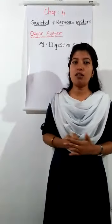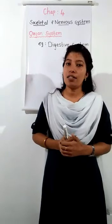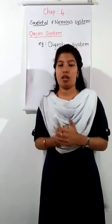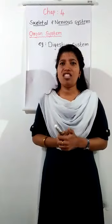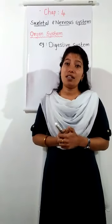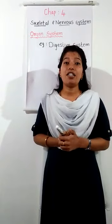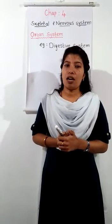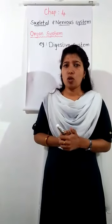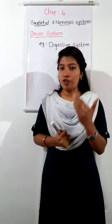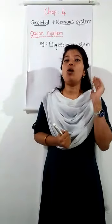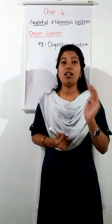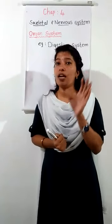The first part of this chapter tells about the organ systems of our body. What do you mean by organ system? You know that our body has many organs, and they work together. These different organs combine to form an organ system. For example, the digestive system includes the stomach, large intestine, small intestine, etc. So organs combine together and form an organ system, and organ systems combine to form the human body.